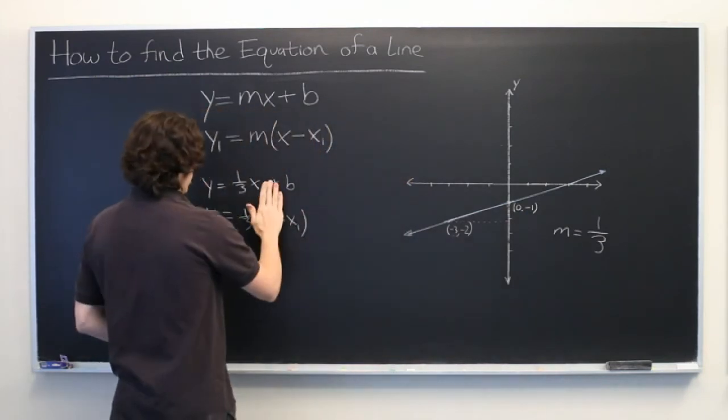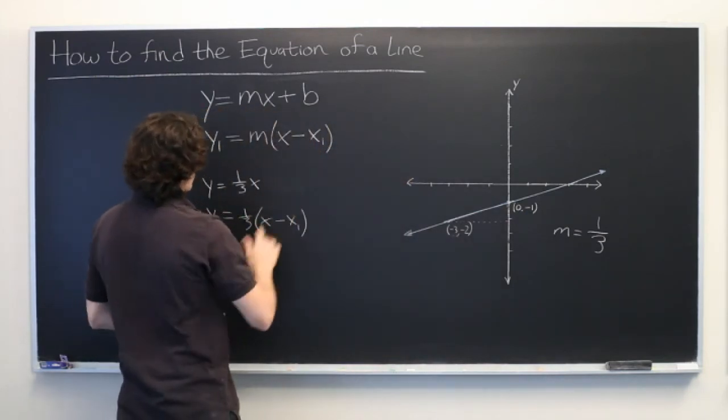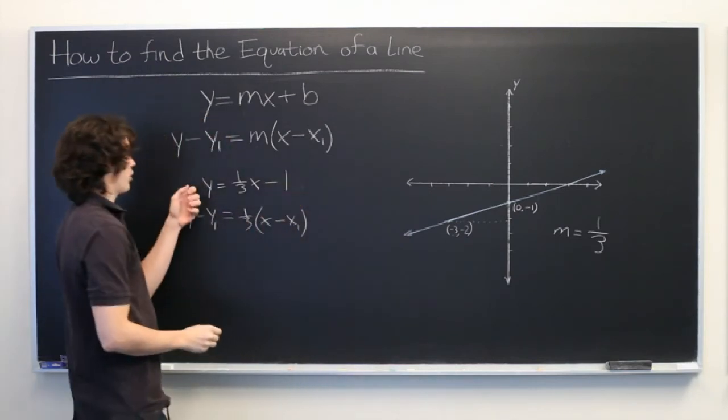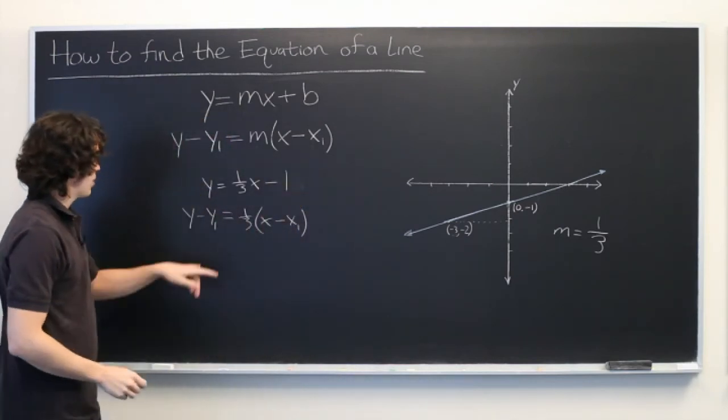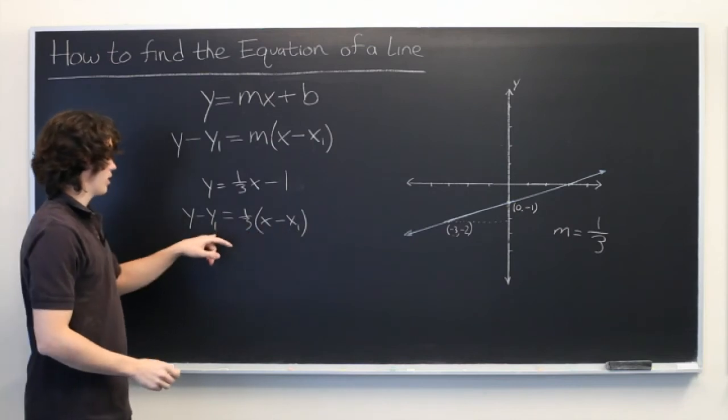We simply plug in negative 1 for b, and we're all set. But we still need to figure out this equation right here.